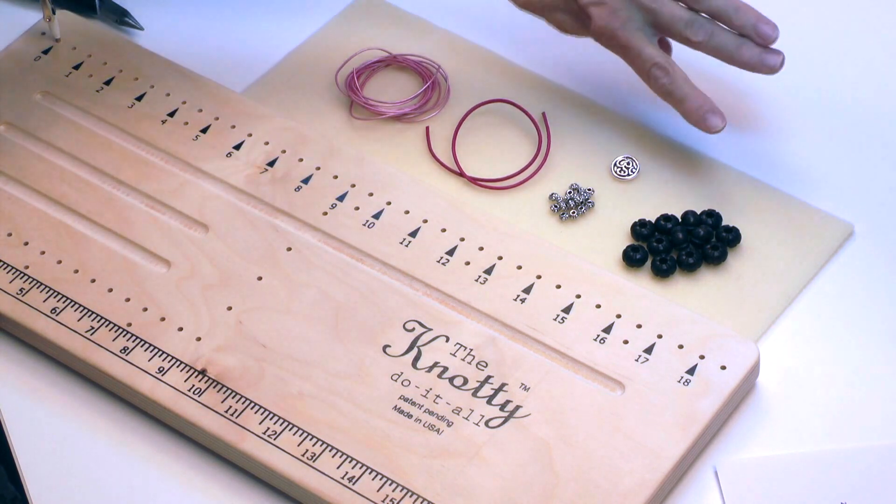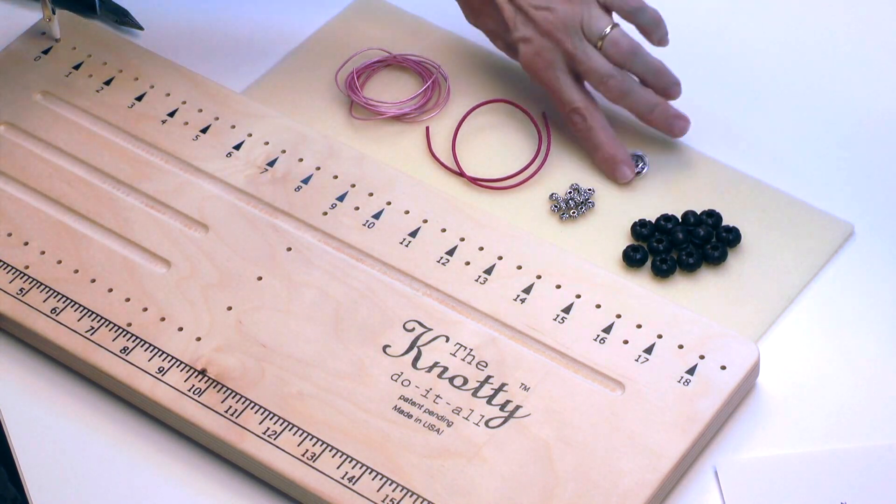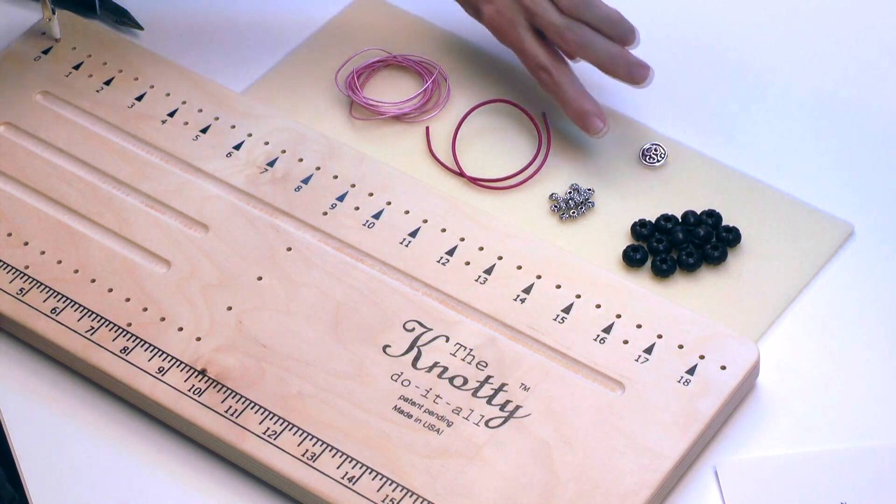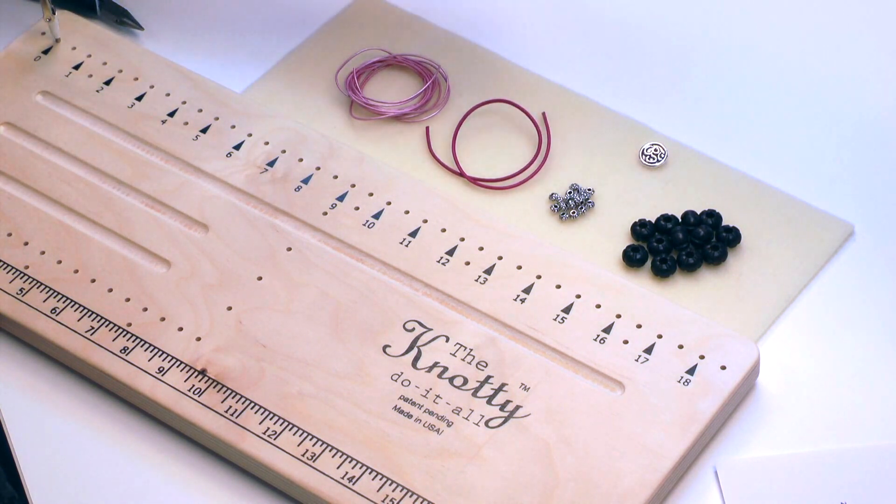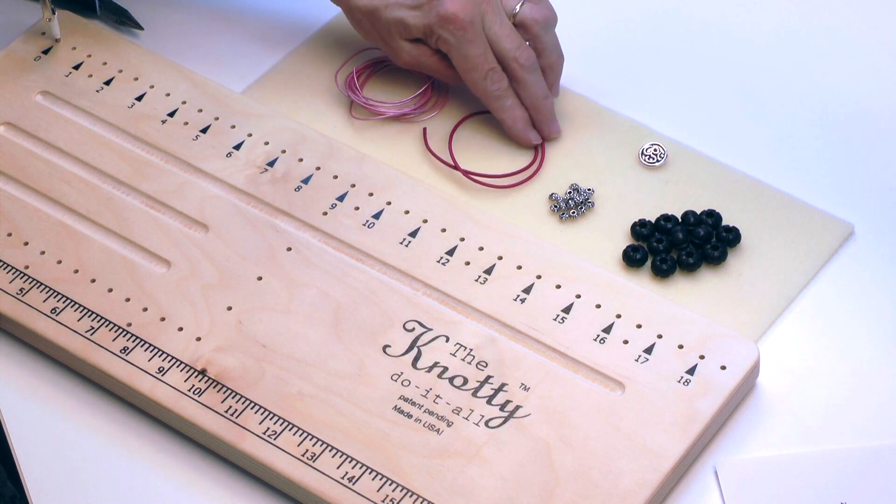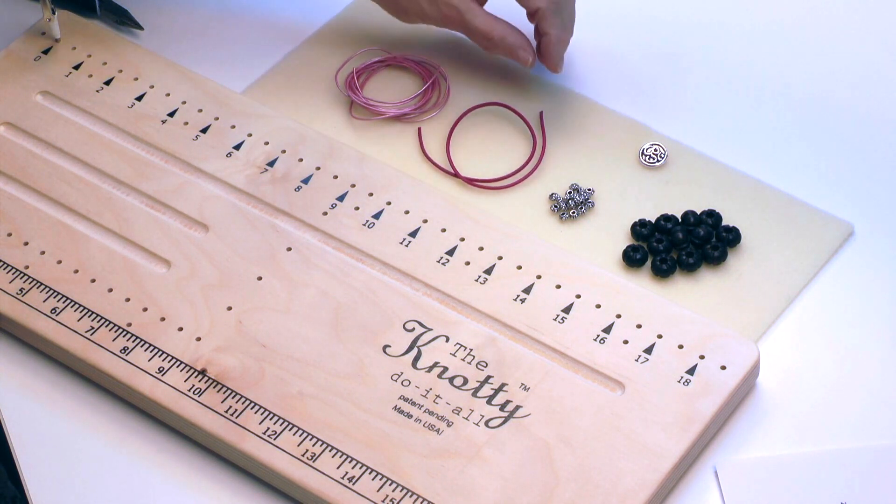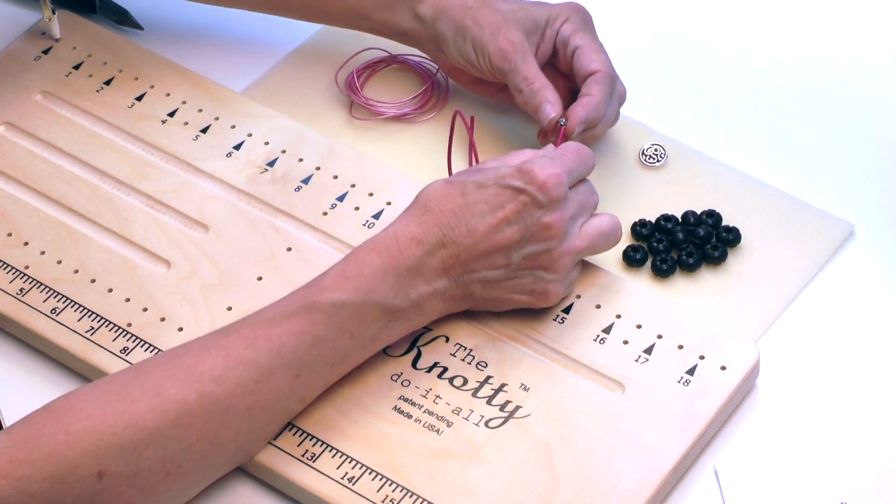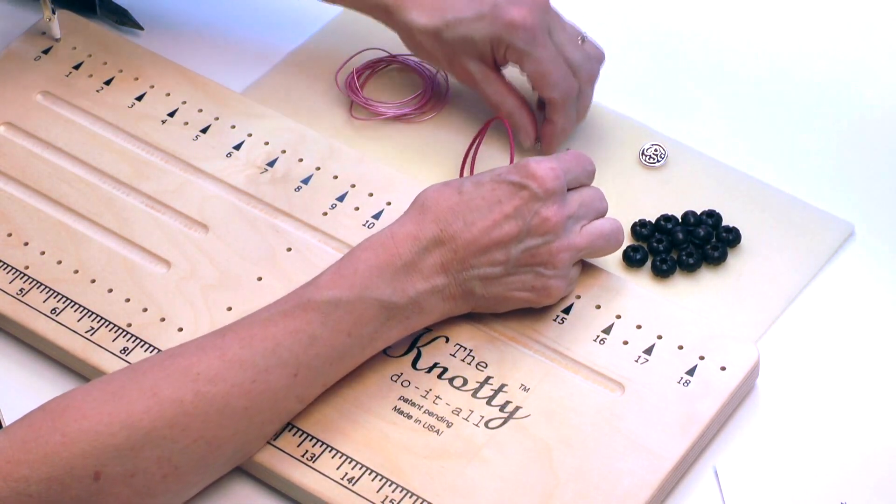First of all are the beads and in this particular case I'm going to use a combination of silver and some large hole wood beads. We're going to use an inside cord and that's what we're going to string the beads on. So I just want to make sure that my beads will go through the cord, no problem with that.